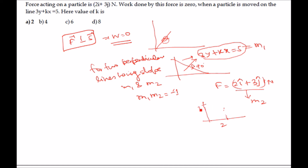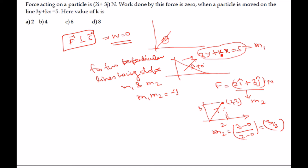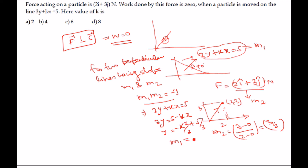The slope of the force line is m2 = (3−0)/(2−0) = 3/2. For the displacement line, from 3y + kx = 5 we get y = −(k/3)x + 5/3, so the slope m1 = −k/3.